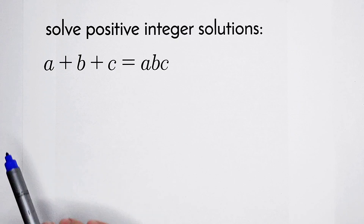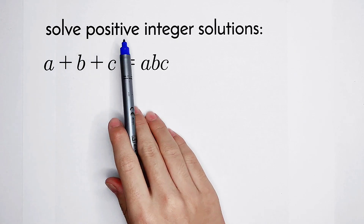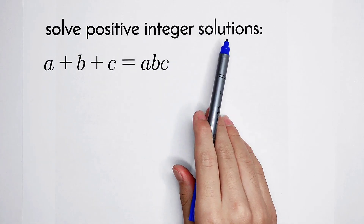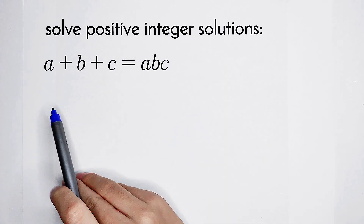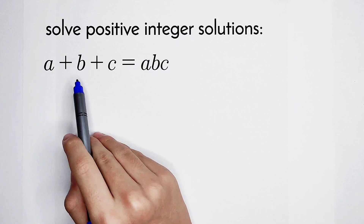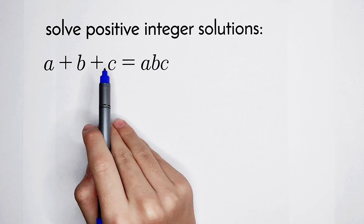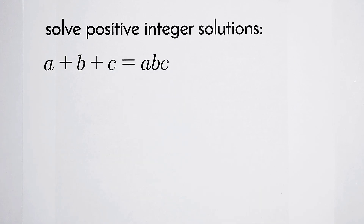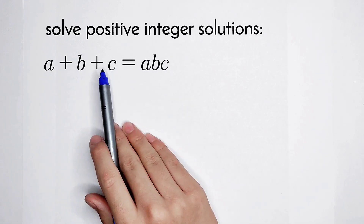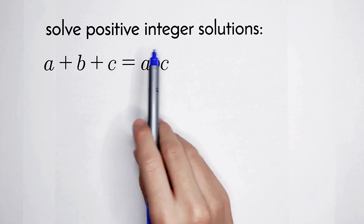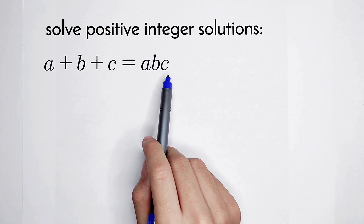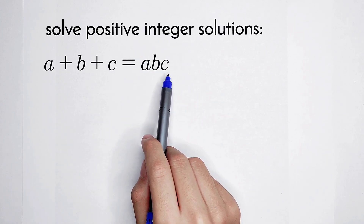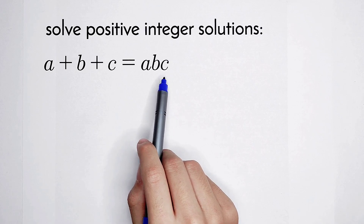Welcome to Math We Know. Some of the positive integer solutions of this equation: A plus B plus C is equal to A times B times C. The left-hand side and the right-hand side are both cyclic symmetry formulas.